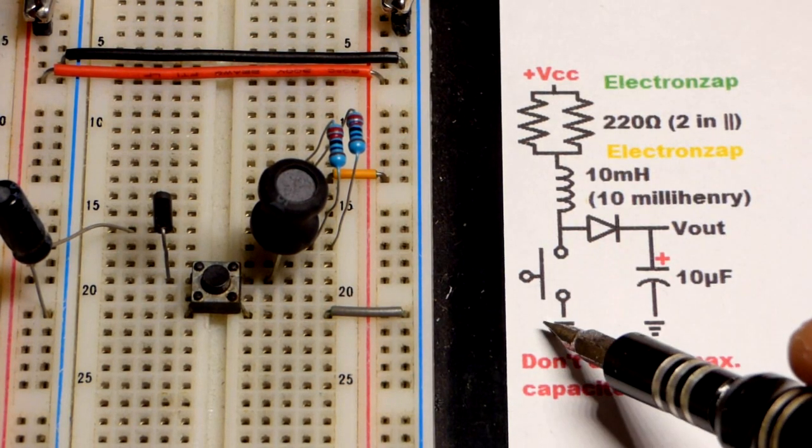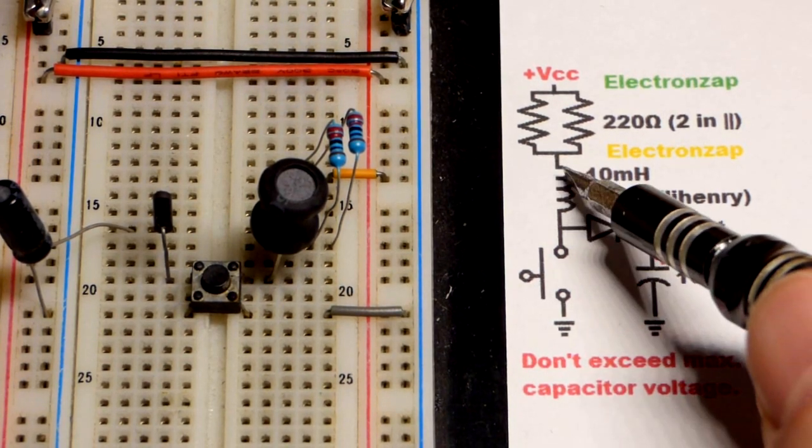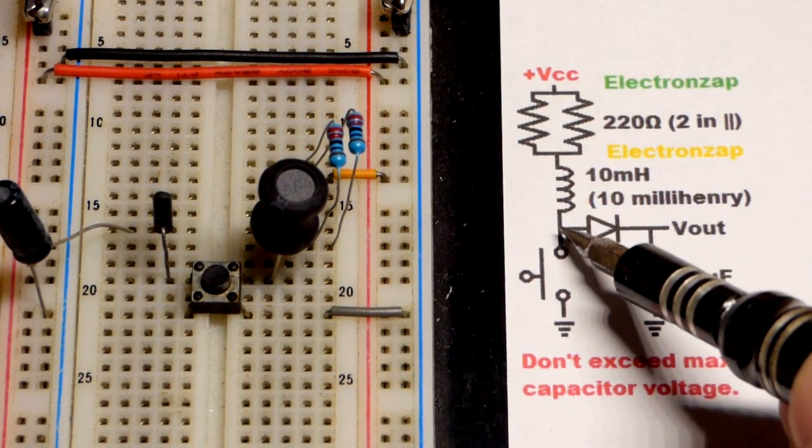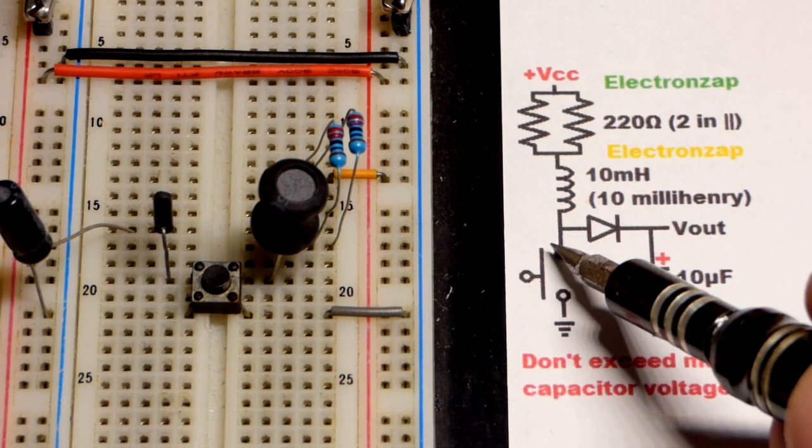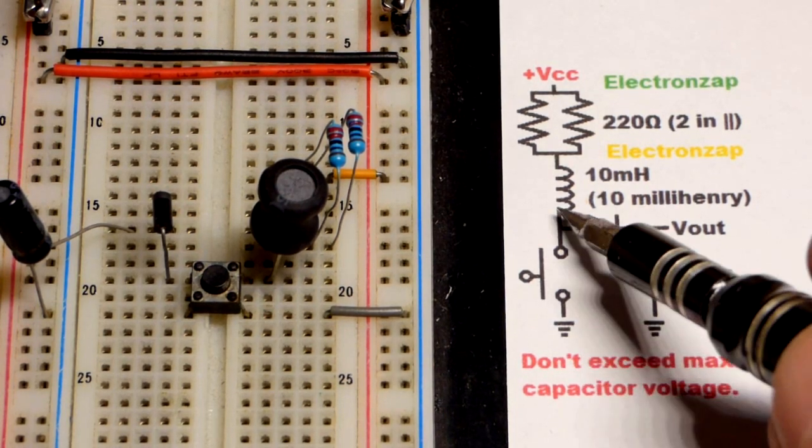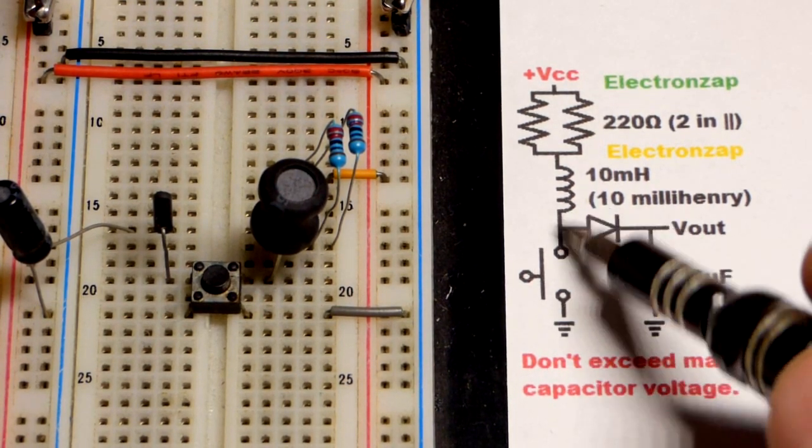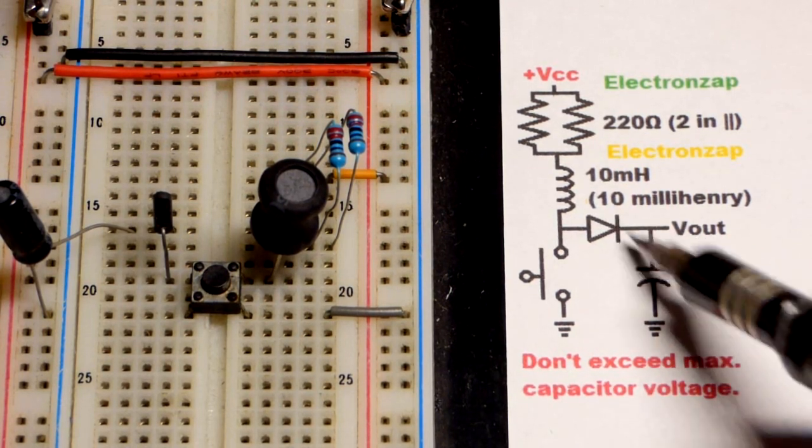Then you open the switch. Without this circuitry here, the inductor is going to keep pushing current and there's going to be a little spark. It generates whatever voltage it needs to make a spark to connect the circuit until the inductor runs out of energy.